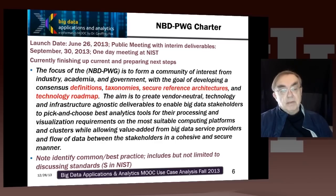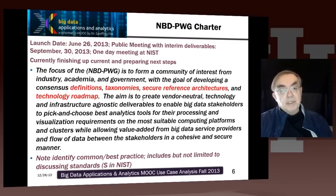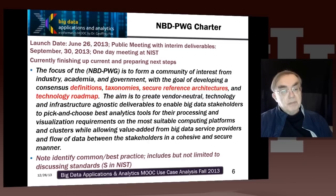The September 30th meeting was basically to summarize where they were and look at some near-term steps — defining what you might call version 1.0 of the whole process. Then sometime in January of 2014, version 2 will be kicked off while version 1 goes through an internal NIST process to take the white papers and material produced by the working groups and make them into publishable form.